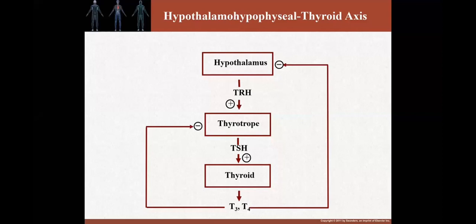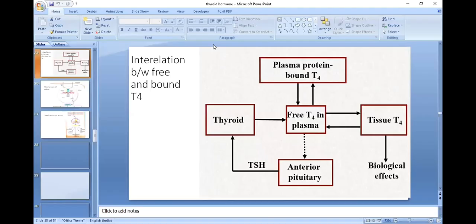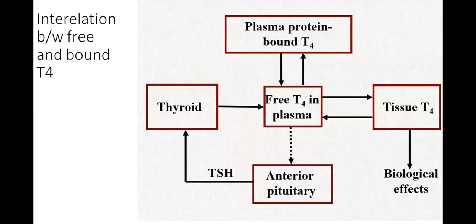To recap: Hypothalamus releases TRH, which acts on anterior pituitary thyrotroph cells, stimulating the thyroid to release T3 and T4. T3 and T4 then provide negative feedback, inhibiting the anterior pituitary and hypothalamus. T4 is converted to T3 to produce biological effects, and the anterior pituitary releases TSH to regulate the thyroid.